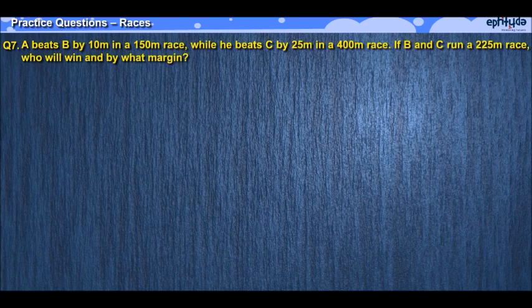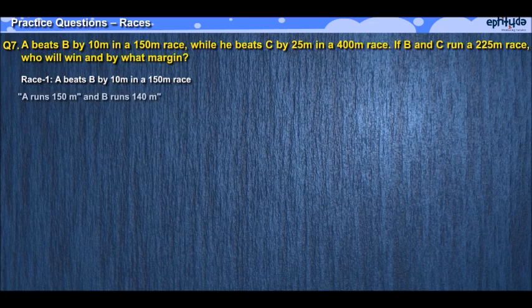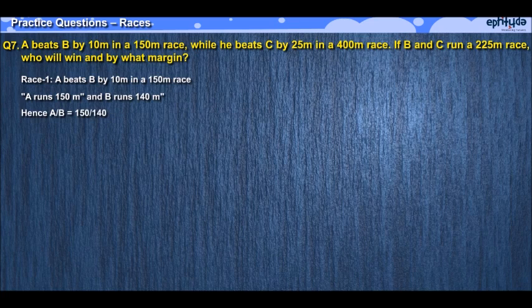Now let's try and understand this better by way of some practice questions. The first question is up here — you might want to pause the video and try this yourself. In the first race, A is beating B by 10 meters, which means that A runs 150 meters in the same time that B takes to run 140 meters. Which means that the ratio of their speeds, A/B, must equal the ratio of these distances: 150 upon 140. Now consider the second race and do the same thing.